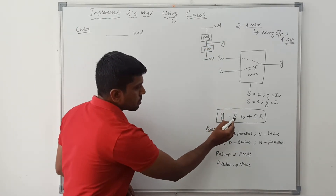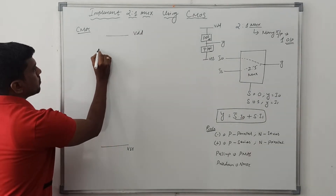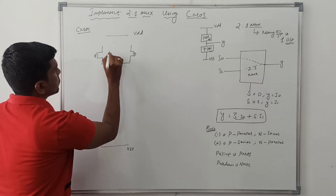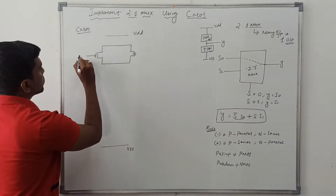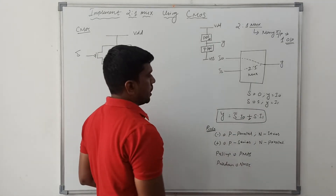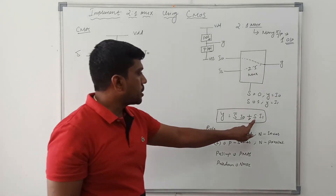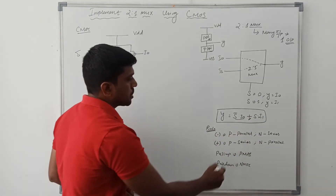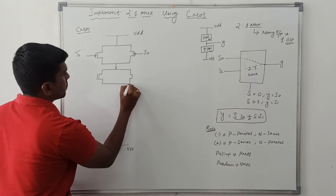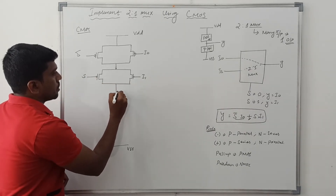In the pull-up network consisting of PMOS: a dot operator is present in the expression, so PMOS transistors connect in parallel. The inputs are S-bar and I0. Then a plus operator is present, so PMOS connects in series. Then for S dot I1, a dot operator is present, so PMOS transistors connect in parallel. Inputs are I1 and S. Pull-up network portion is now complete.